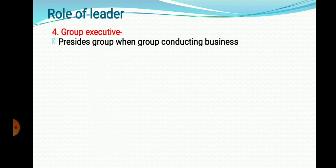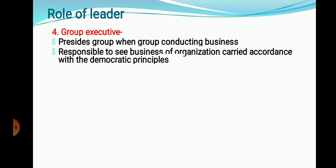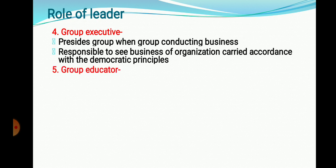The fourth role is Group Executive. The leader presides over the group when it is conducting its business — for example, in a self-help group, he must act in a supportive role. He is responsible for ensuring that business is carried out according to democratic principles and that everything is conducted properly with no fraud or irregularities.